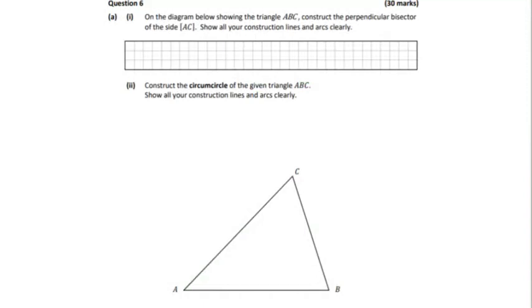a triangle and we want to construct a perpendicular bisector to the side AC. So AC is down here. Let's look at this term here, perpendicular bisector. The bisector is the key here. We need to bisect that line, so therefore let's follow these steps.